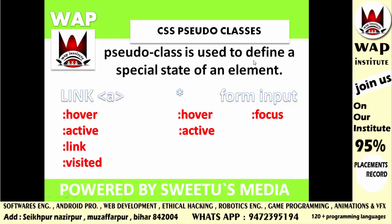Conditions apply करने का मतलब है, आप चाहते हो कि आपकी property और value तब काम करे जब आपका user mouse का button press करे या keyboard से कोई button press करे। जैसे किसी menu के text का color change हो जाता है, या over करने पे उस menu का size बढ़ जाता है, या उसमें animations generate हो जाते हैं। इस तरह के features को pseudo-classes में आसानी से बनाया जा सकता है।